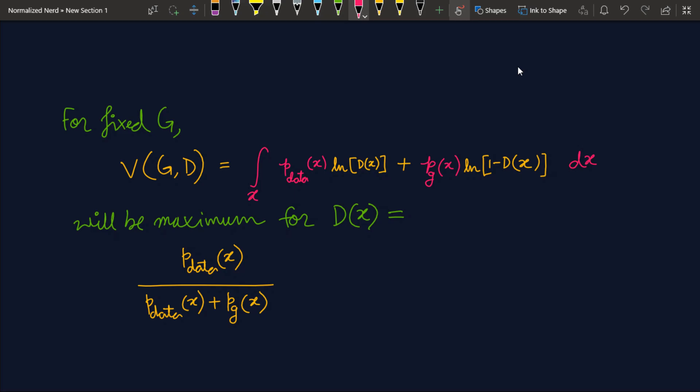Okay, this is a two-step process. First of all, we are fixing the G and we wanna see for which value of the discriminator the value function is maximum. Look here that I have replaced G of Z with X. Well, we can do this because the domain of both of them are same. Now if you differentiate this, then you will see that the maximum value of this expression will occur if the D of X attains this expression: P data over P data plus PG.